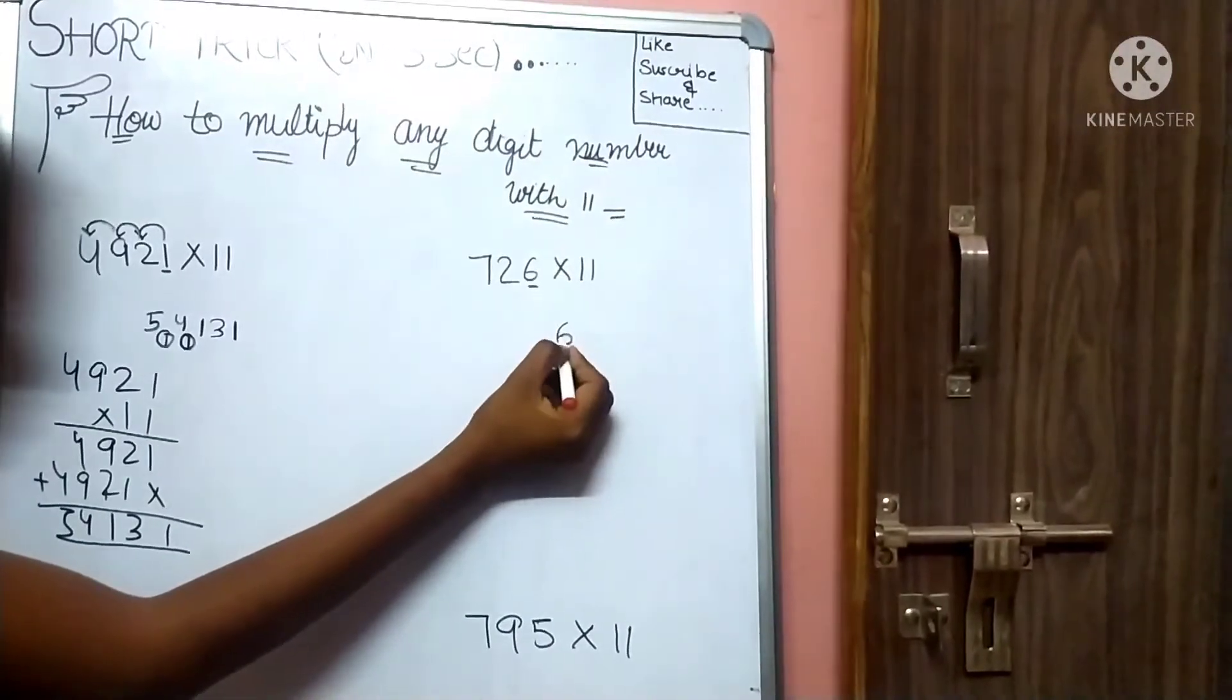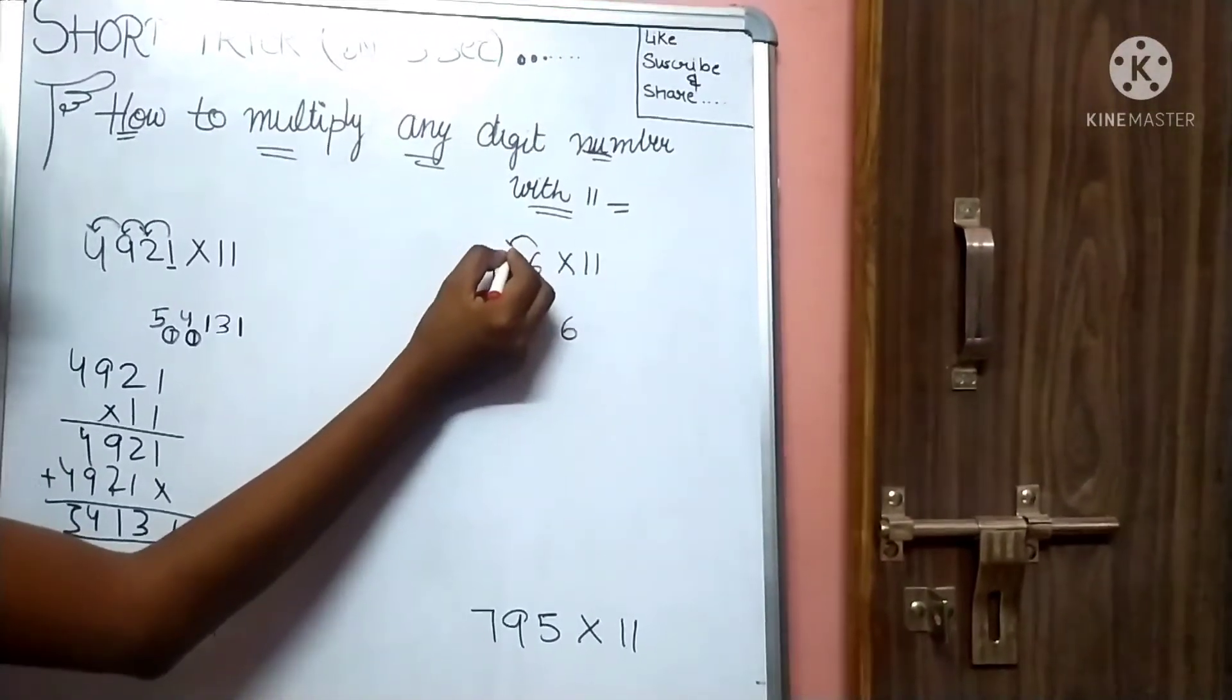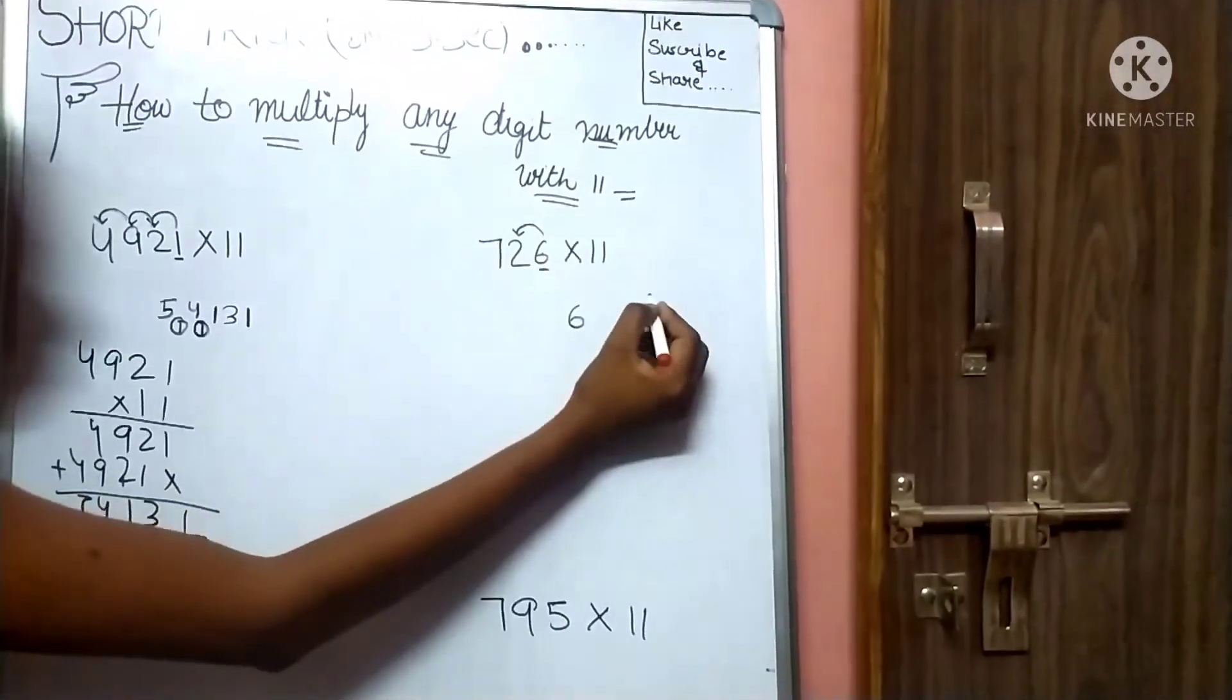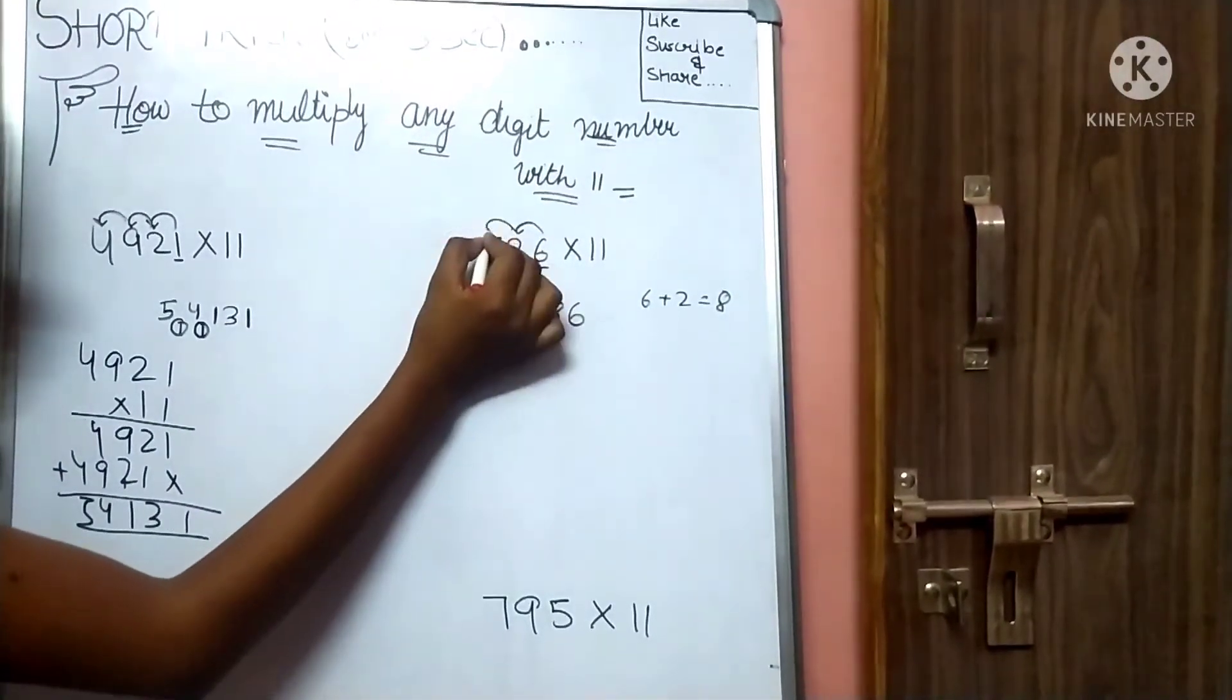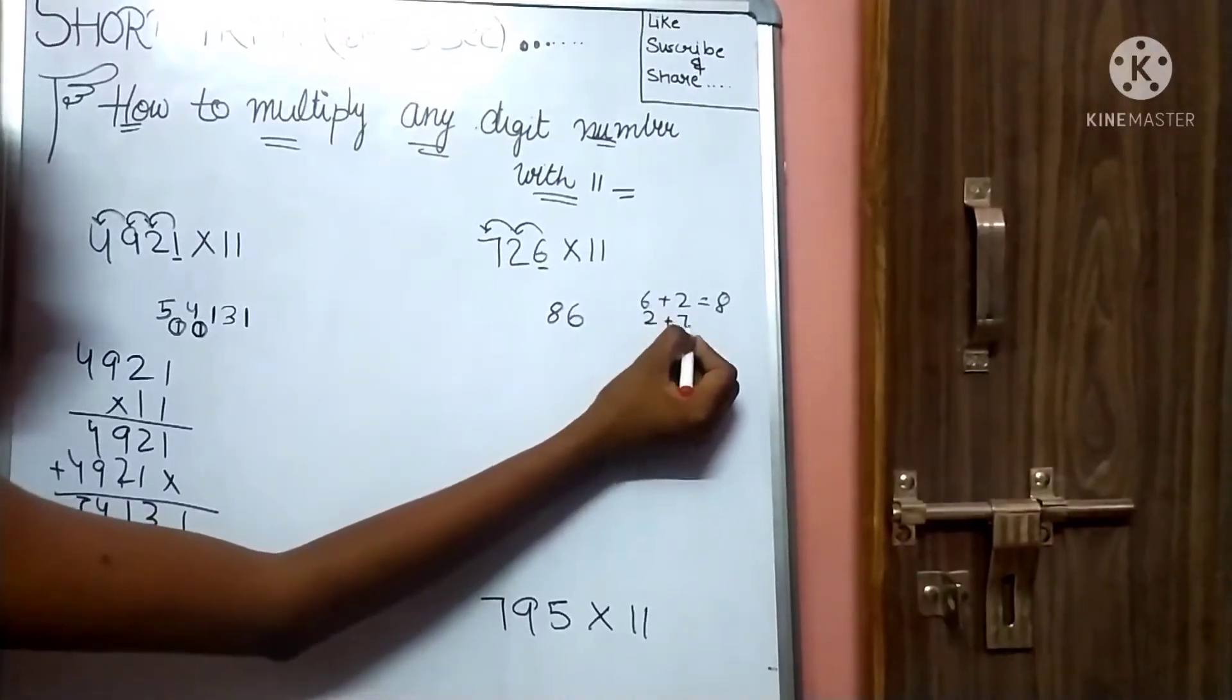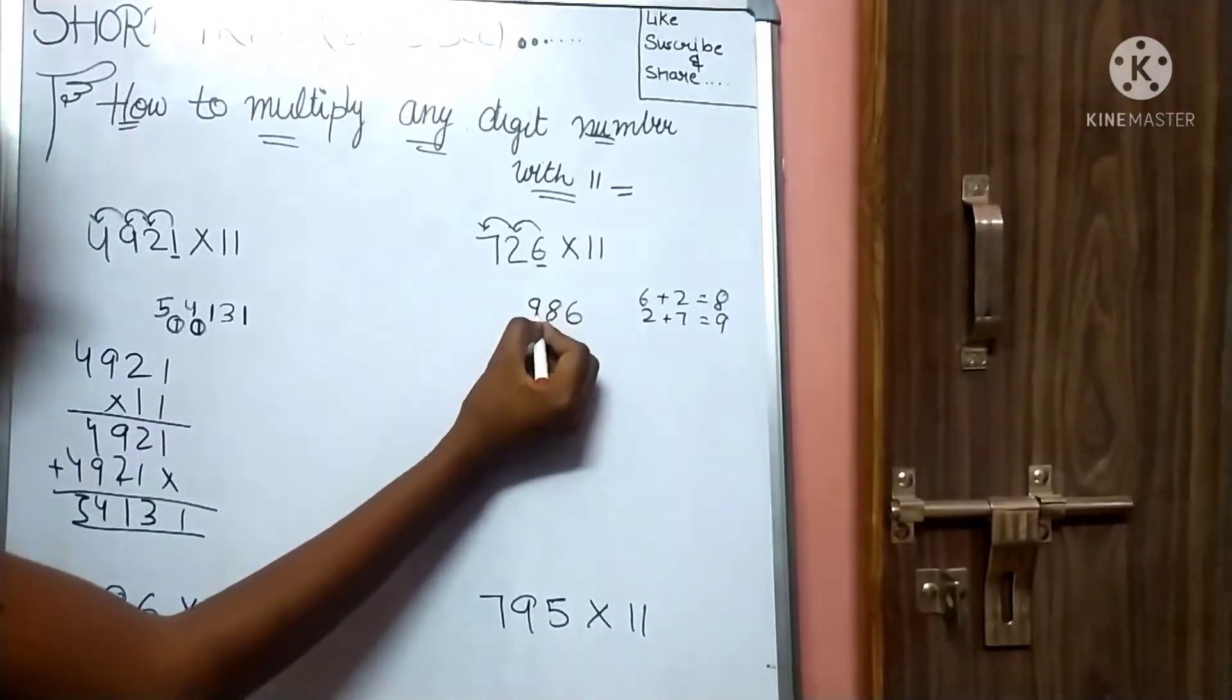726 times 11. Once place as it is, which is 6. We will add tens value. 6 plus 2 equals 8. 7 plus 2 equals 9. Now carry.